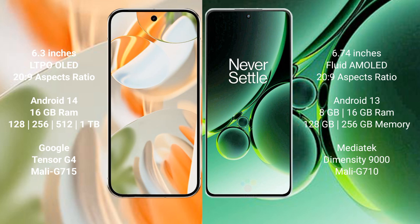Google Pixel 9 Pro runs on the Android 14 operating system. OnePlus Nord 3 runs on the Android 13 operating system.